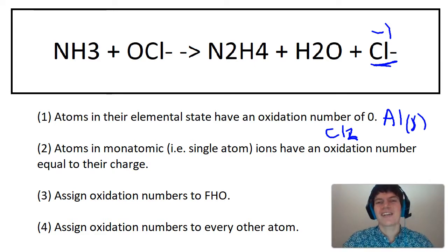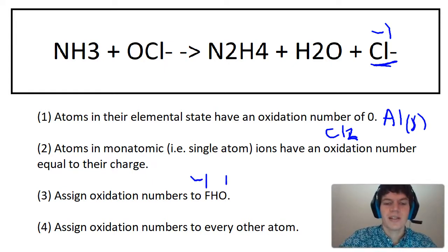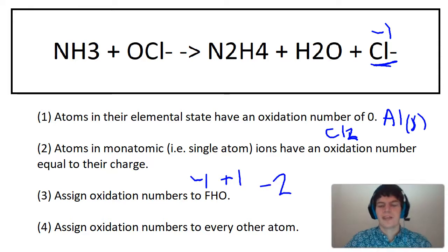Step three, assign oxidation numbers to fluorine, hydrogen, and oxygen. The charge for fluorine would be minus one, oxidation number for hydrogen would be plus one, and the oxidation number for oxygen would be minus two.